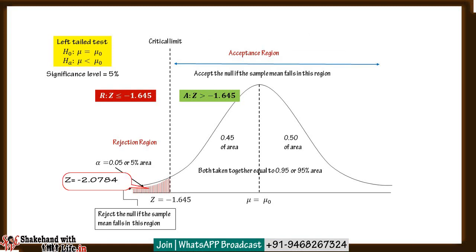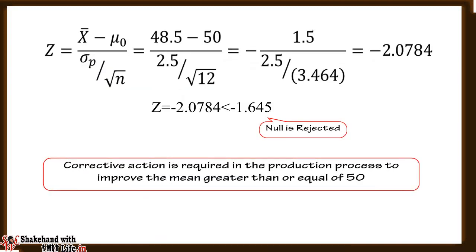The calculated z value of minus 2.0784 is less than the critical value of minus 1.645 at 5% significance level under the left tail test condition. Hence it lies in the rejection region, and therefore the null hypothesis is rejected. We conclude that there is a requirement for corrective action in the production process to improve the sample mean to significantly greater than 50.